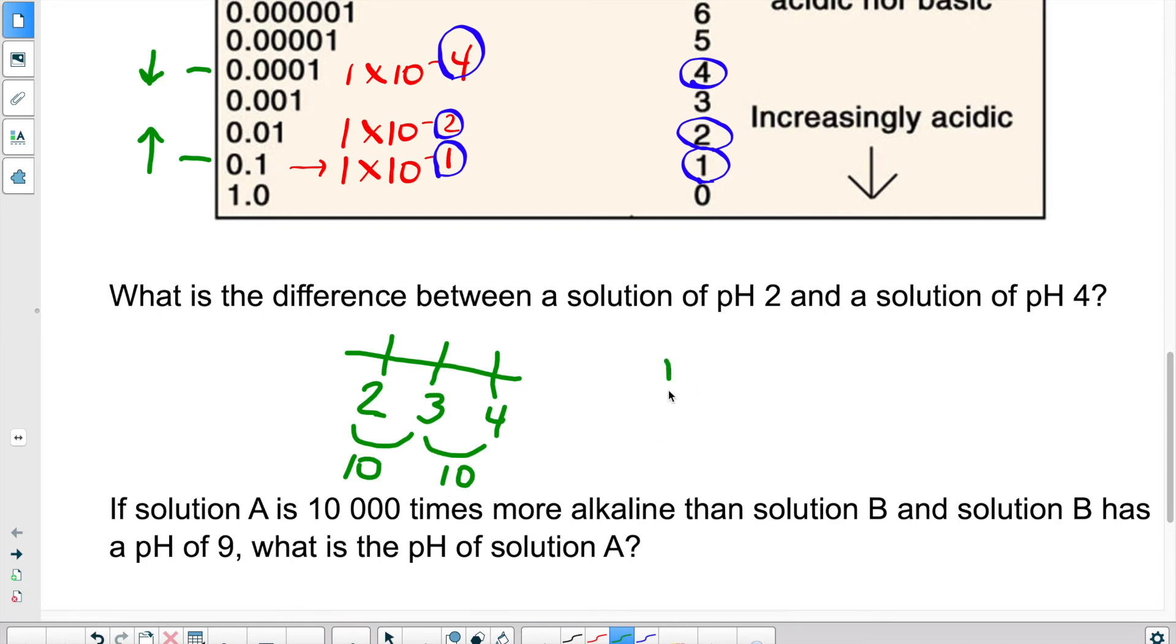we said that between each number, there's a factor of 10. So 10 times 10, it would be a difference of 100. So pH 2 is 100 times more acidic than a pH of 4.